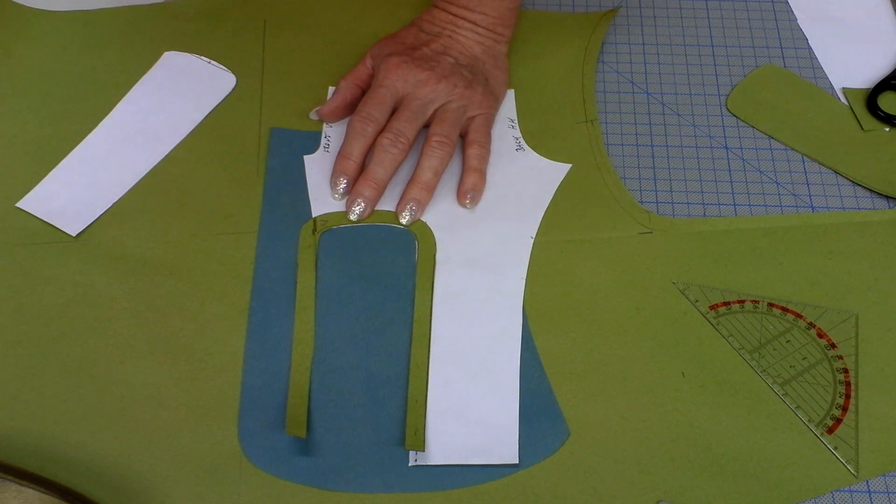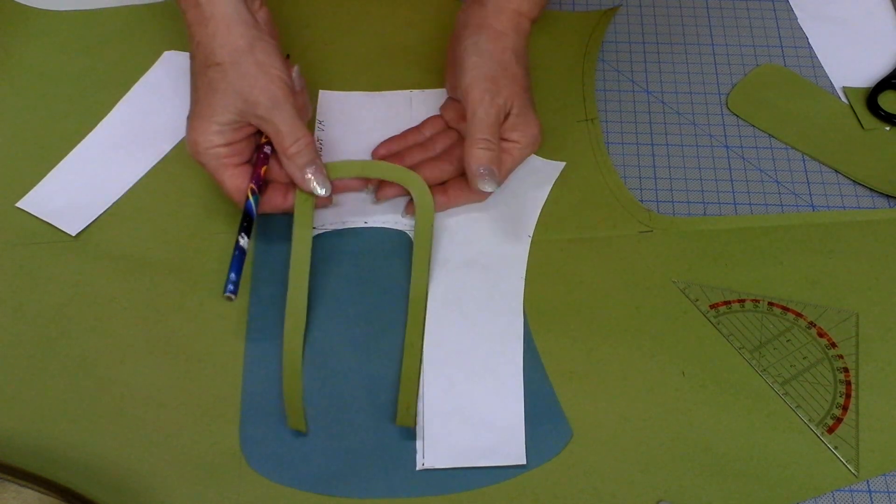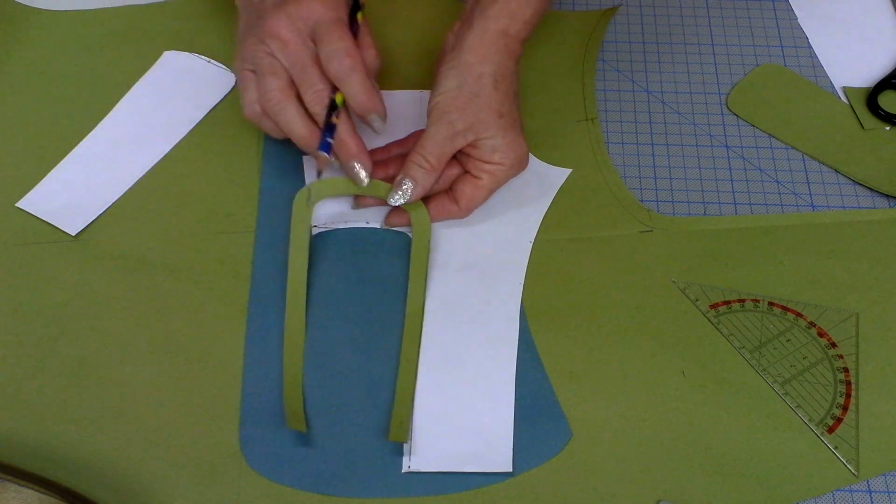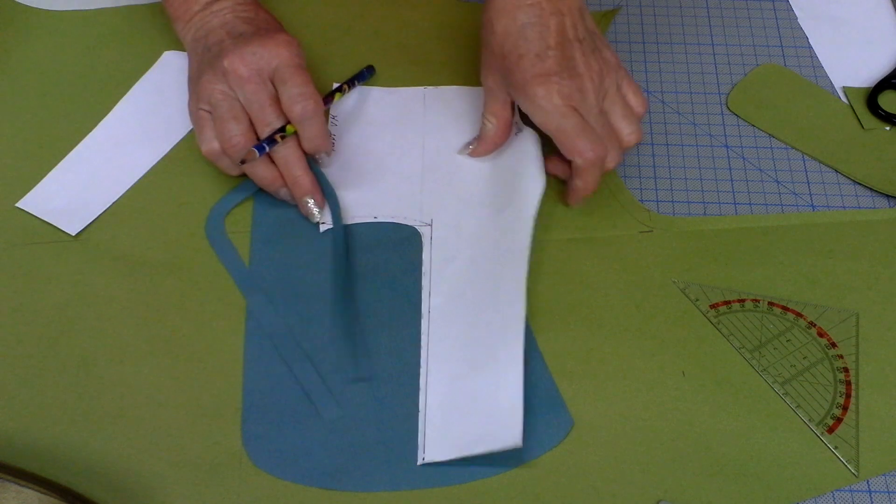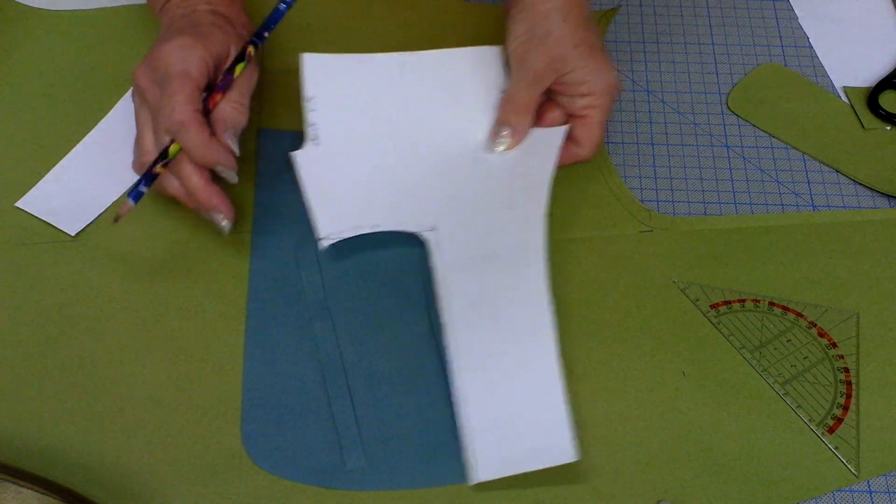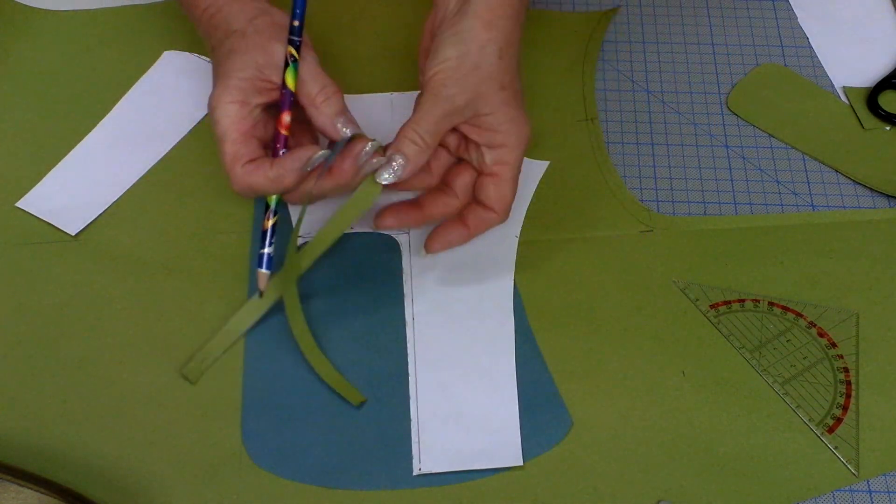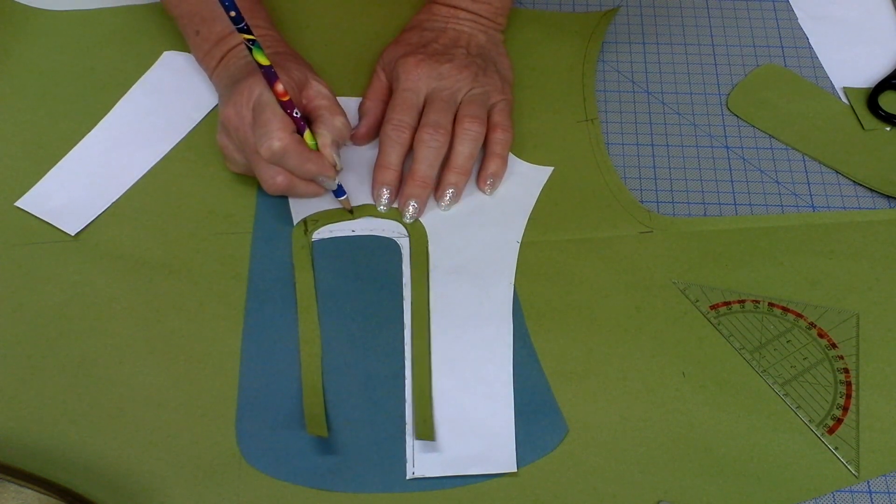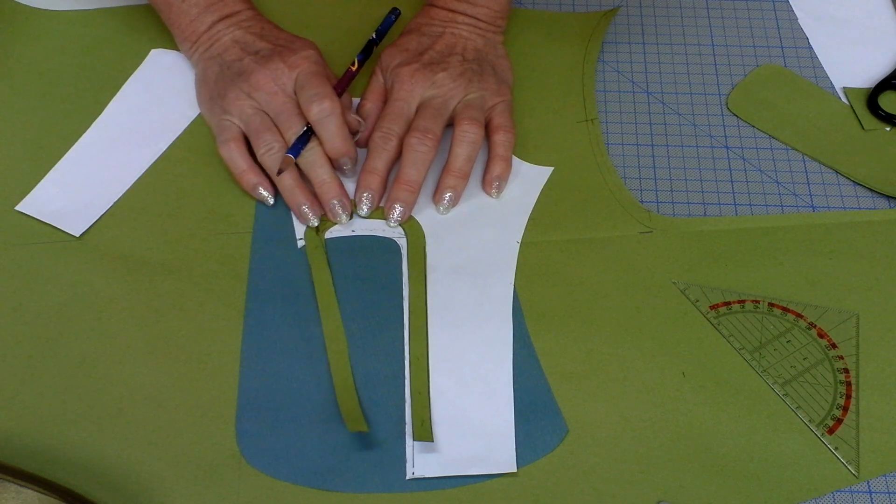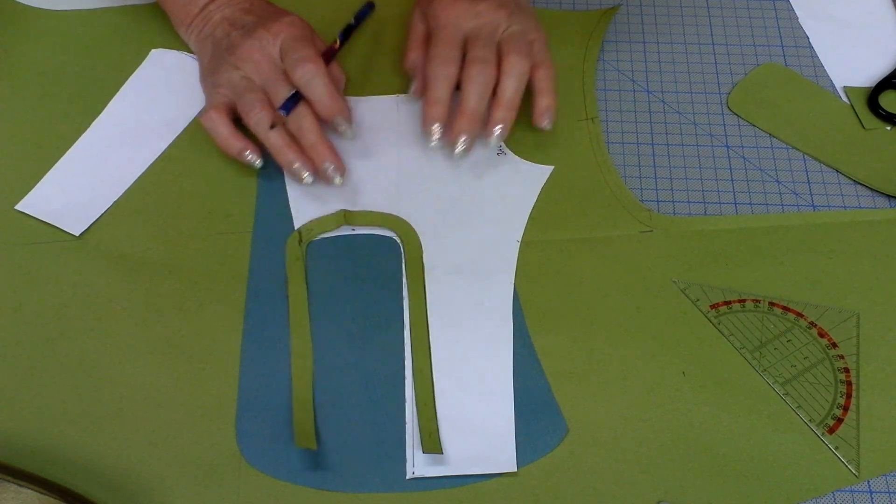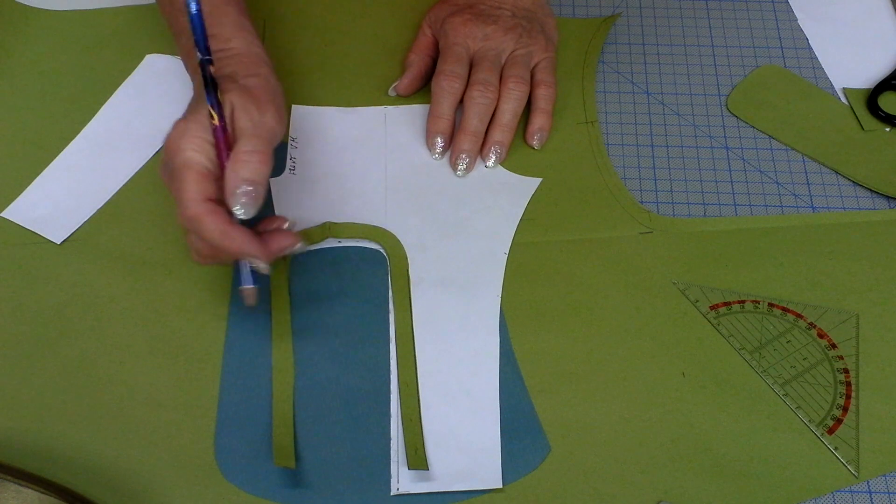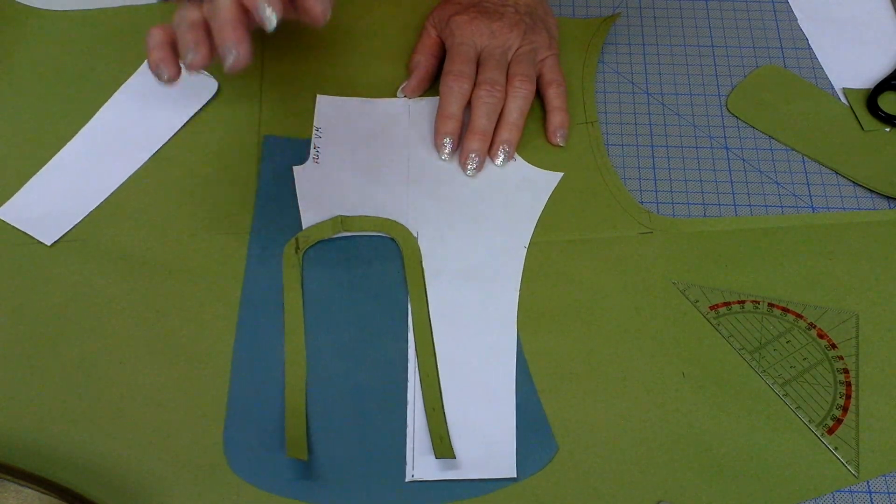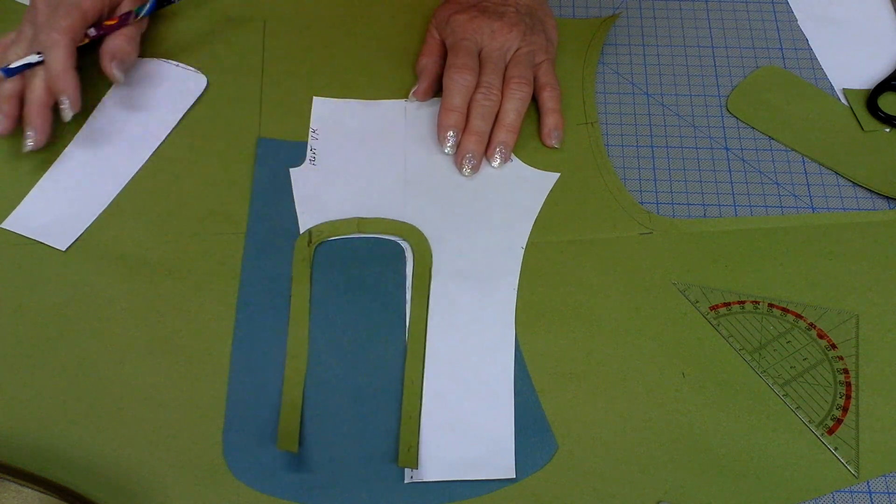And one more little hint: as this part always takes a lot of material when you have something like that, as that one is not shown as it will be later on underneath the trousers, you can of course cut this as an example here in half and put a seam right there. But be sure then to make it all in the right fitting.